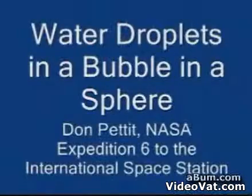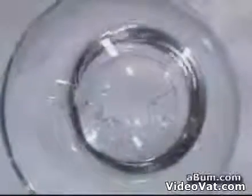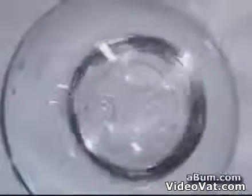Water droplets in a bubble in a sphere. Here we have a sphere of water 75 millimeters in diameter with an air bubble inside about 35 millimeters in diameter, and we inject water droplets anywhere from 1 to 8 millimeters in diameter into the bubble, and look at the resulting collision dynamics where they collide with each other and the walls.